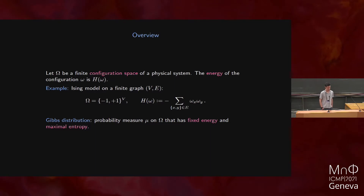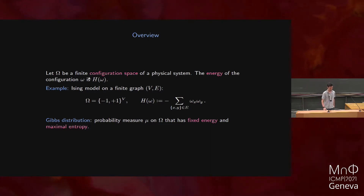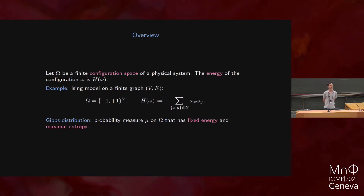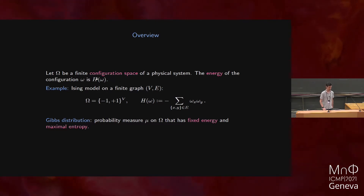I would like to give you, first, a motivation. What are we trying to achieve? We take, for now, a configuration space of a physical system, which is just an abstract set containing all the different configurations the state can be in. The one thing that characterizes this system is its energy — a function of the configuration — and I call this energy H of omega, where omega is the configuration.